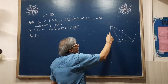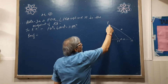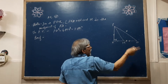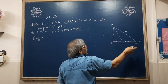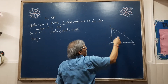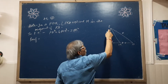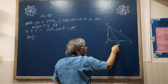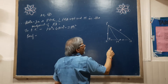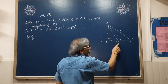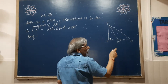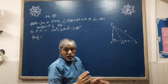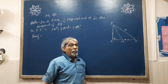Then we take another triangle — in triangle PRM. Again, by Pythagoras theorem, PM squared is equal to PR squared plus RM squared. And then we go further using the transitive property.